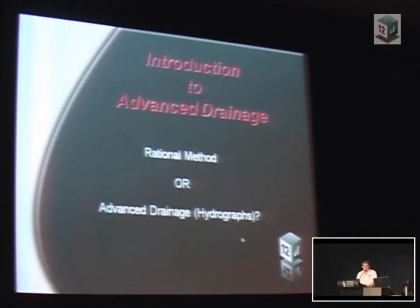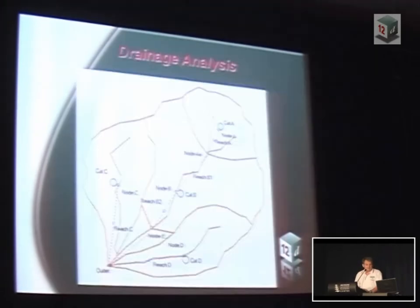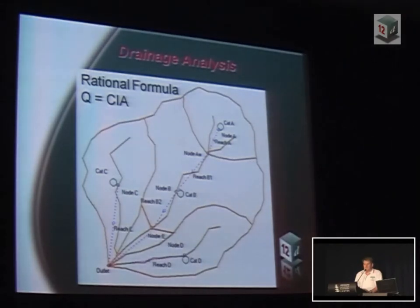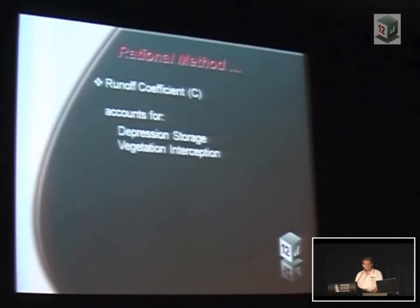I'm going to do drainage for dummies and go through the differences between the rational method and the new hydrograph method that we've developed. Everybody knows the rational formula: Q equals CIA — C times I times A, where C times A is your equivalent impervious area and I is your rainfall intensity. The C value is the critical one; it accounts for a whole swag of things.